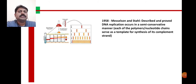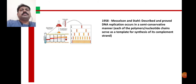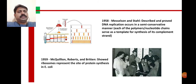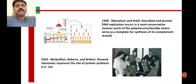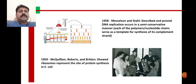Earlier, three mechanisms were proposed: conservative, semi-conservative, or random replication. The contribution of Meselson and Stahl proved that replication is semi-conservative. Then in 1959, McAleen, Roberts, and Gritten showed the contribution of ribosomes. Ribosomes are present in the cytoplasmic matrix in dissociated form, but when involved in protein synthesis they become associated with mRNA.